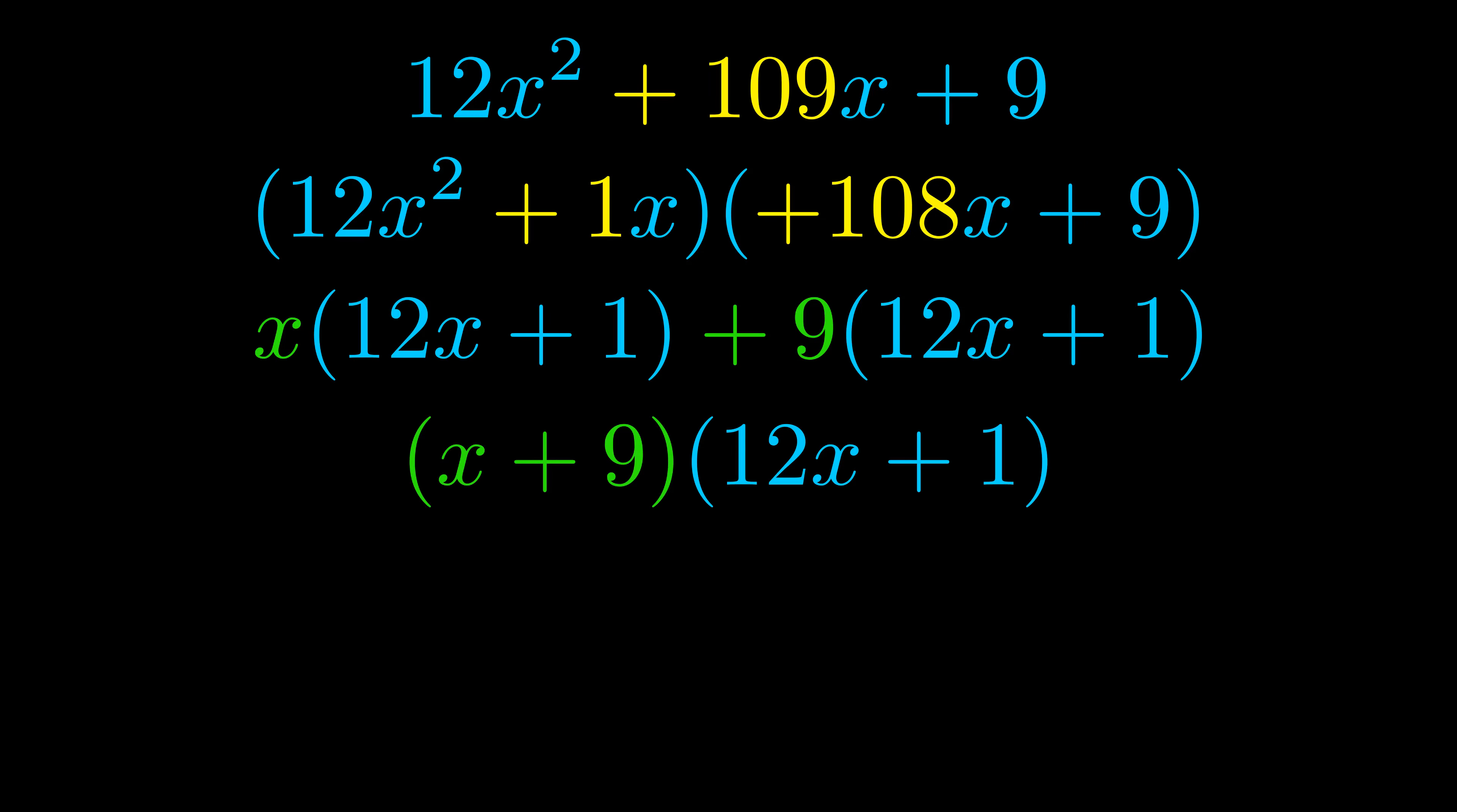Notice also how what remains inside of the parentheses is the same in both cases. The blue values are the same. Those blue values will become one of our factors and we will combine the two green values, the GCFs that we pulled out, to get the other one. And that is our fully factored equation.